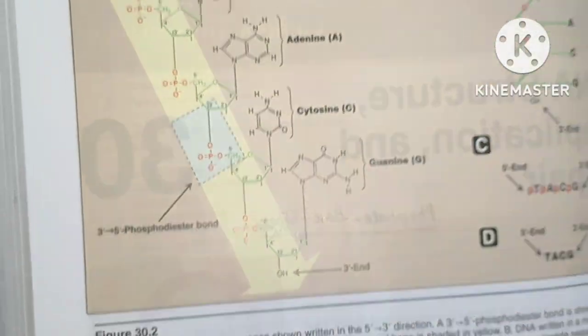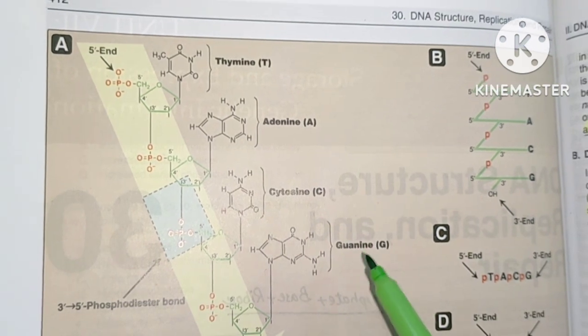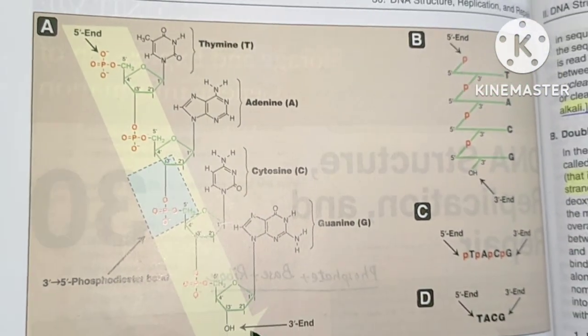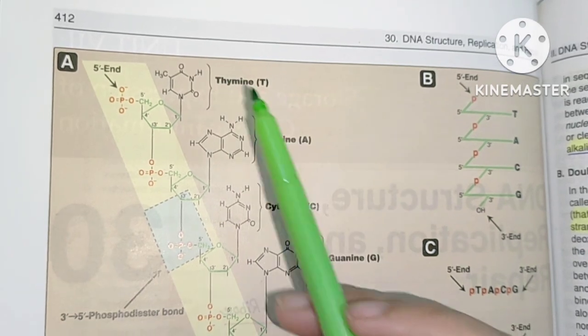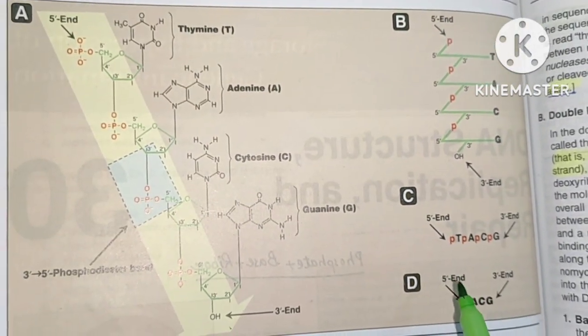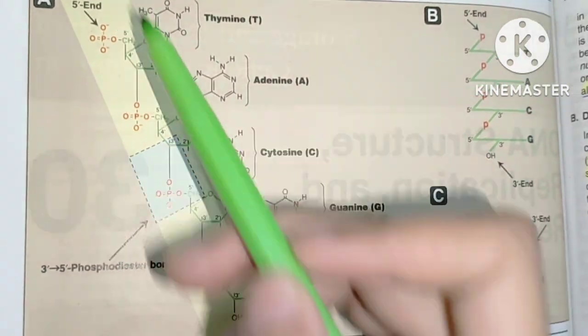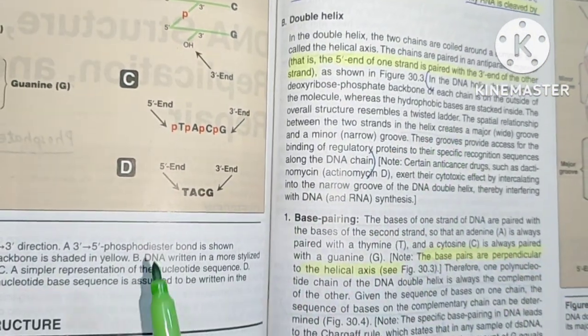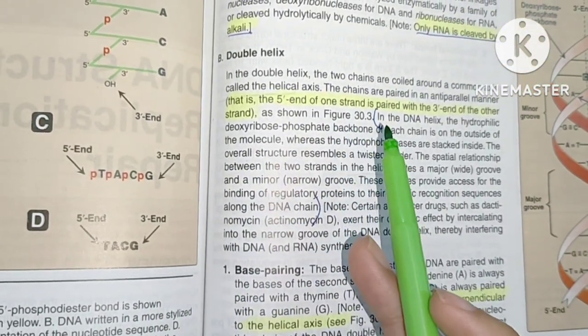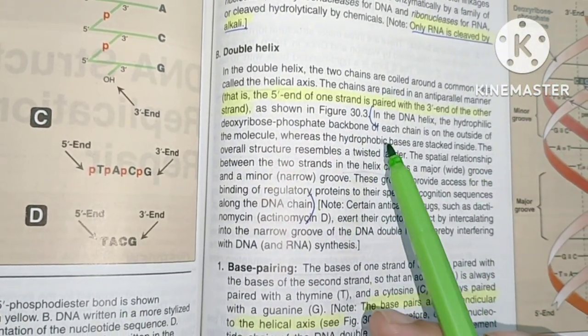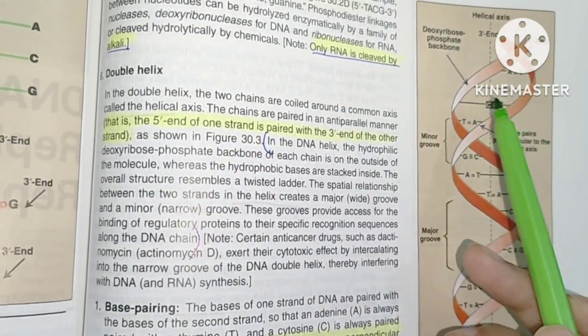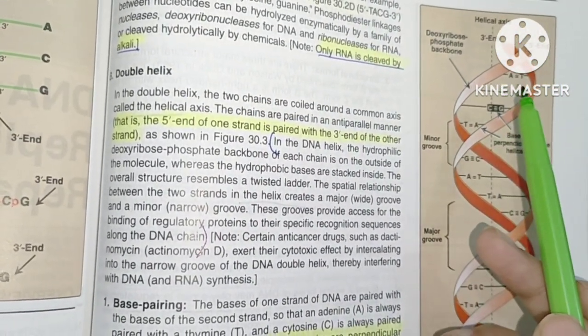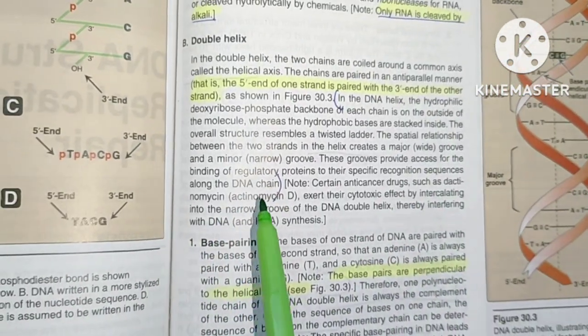The two strands run antiparallel — one strand runs 5' to 3' and the complementary strand runs 3' to 5'. For example, a sequence TACG runs 5' to 3' on one strand. The phosphate backbone is hydrophilic, while the bases (adenine, thymine, cytosine, guanine) are hydrophobic and face inward.